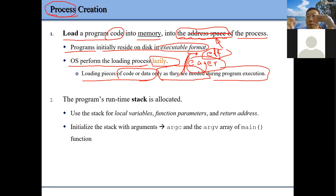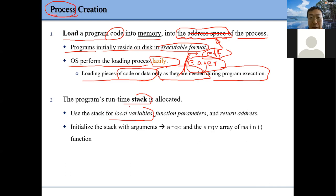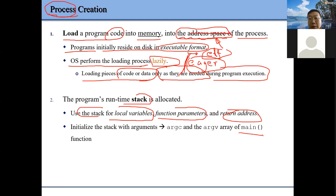Second, related to the stack — stack is very important. We use the stack for function local variables. When we call a function, the parameters and return address need to be put onto the stack. For example, when we go into the main function, we have some parameters — how many and what each parameter is — those things will be put onto our stack, so we need to set up our stack properly.